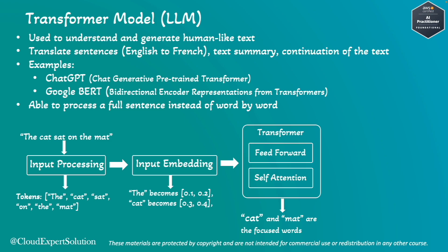The next part is layers of processing. The model has several layers and each layer refines the understanding. The first layer might understand that 'cat' is an animal, and the next layer might understand that 'sat' is an action — so it tries to understand what is the verb, what is the noun, what is the action versus what is the object. It has multiple layers, which is where the feed-forward network comes into picture. Layer one processes, then passes that information to the next layer, and so on for multiple layers to process the entire request.